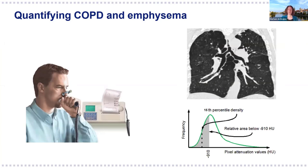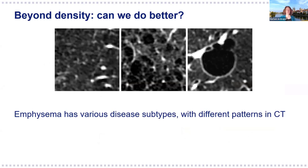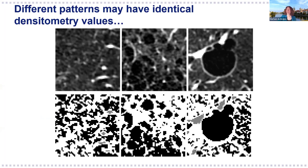CT quantification is typically based on CT density values—we look at the histogram of CT values inside the lung field and measure the relative area of low density below a certain threshold. This gives some estimate of emphysema, but there are many things we cannot measure this way. Emphysema has various subtypes with different patterns in CT that we cannot distinguish with simple densitometry. Here you see an example of three very different CT patterns of emphysema that would all have identical densitometry values, so we want to do better than that.